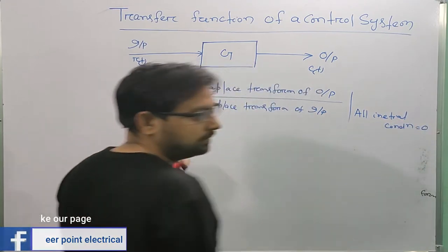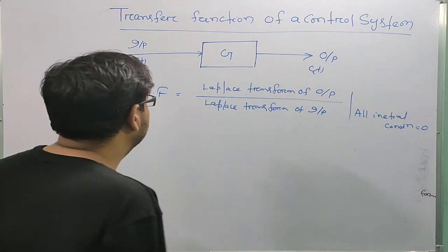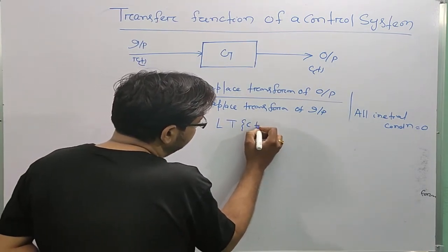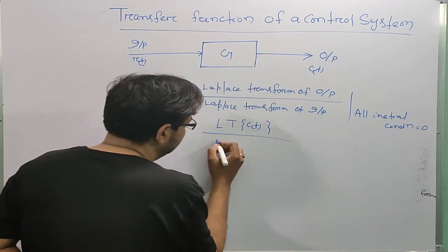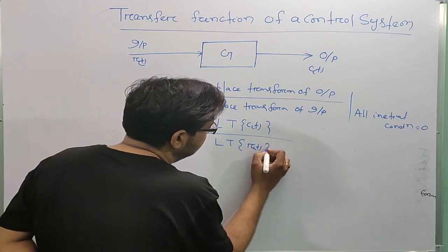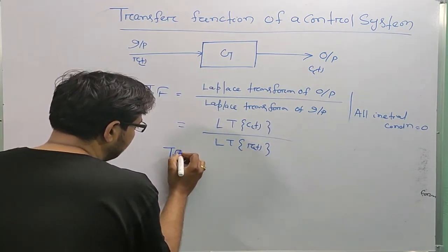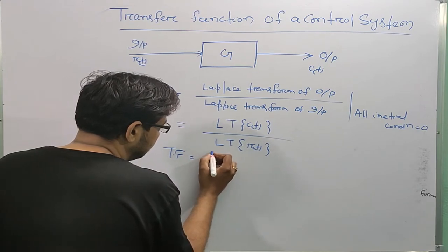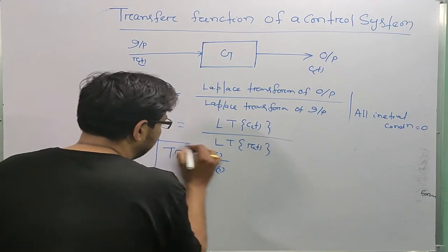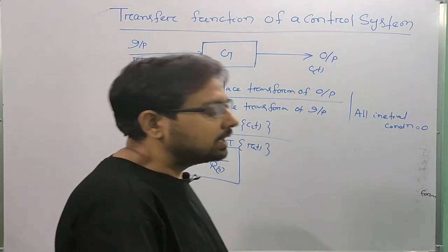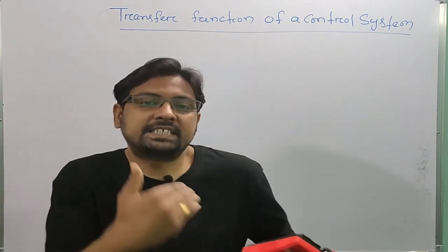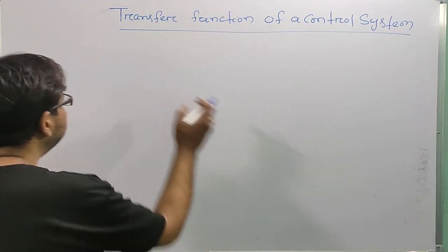There is a condition: all initial conditions are equal to zero. So the Laplace transform of c(t) divided by the Laplace transform of r(t) gives us C(s)/R(s). This is the formula of my transfer function of a control system.